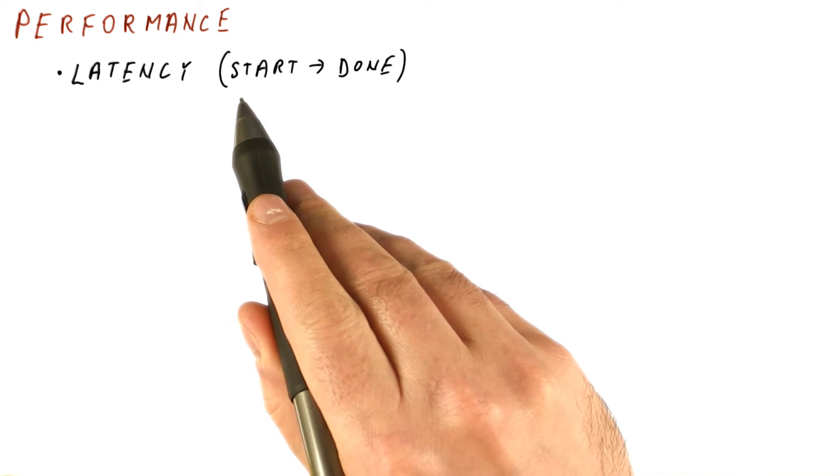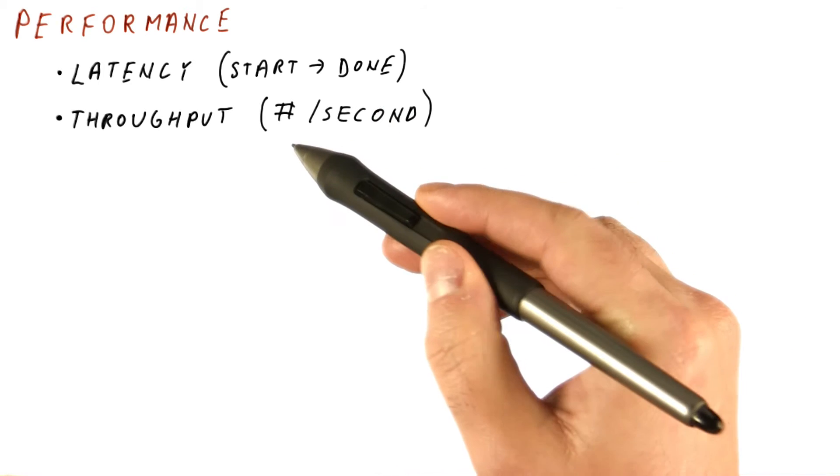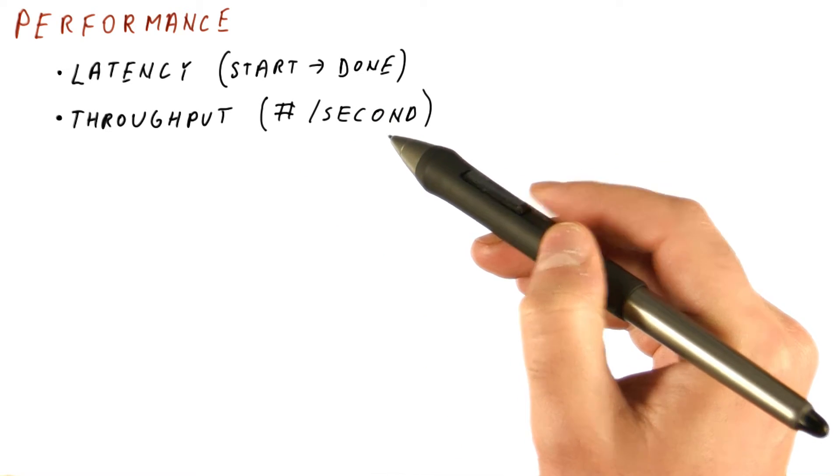One is latency. It's about how long does it take from when we start something until it's done. The other is throughput, which is how many things can we do per second.